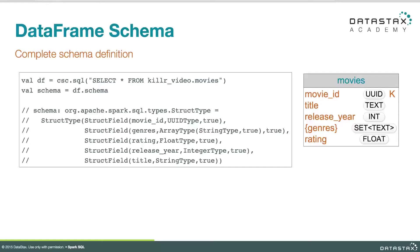Another way to solve this same problem is the schema method on the data frame object. It's going to return a data structure that allows us to programmatically introspect the schema of the data frame. Except instead of an array of tuples, this time it's a StructType object, which is going to contain StructField objects that themselves will tell us the column name and the data type — programmatic access to the schema in terms of those StructType and StructField objects defined in the Spark SQL API.